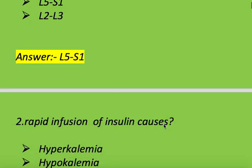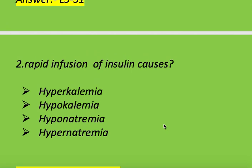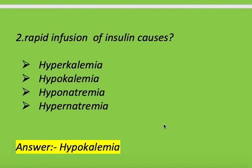Next question: rapid infusion of insulin causes which electrolyte imbalance? Options: hypokalemia, hyponatremia. Right answer is hypokalemia. Rapid infusion of insulin causes hypokalemia.